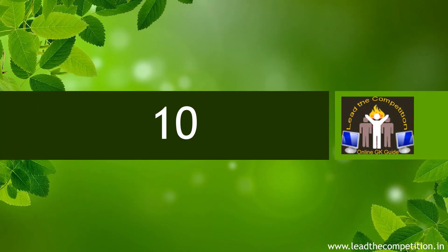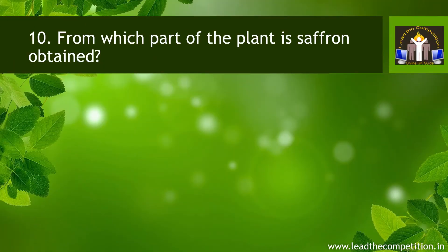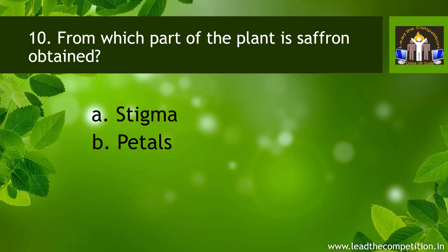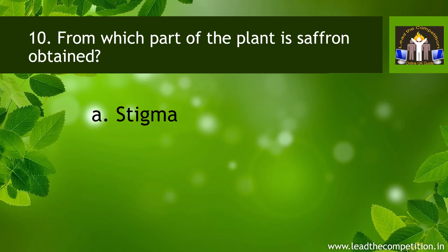Question number 10. From which part of the plant is saffron obtained? A. Stigma. B. Petals. C. Stamens. D. Sepals. The correct answer is A. Stigma.